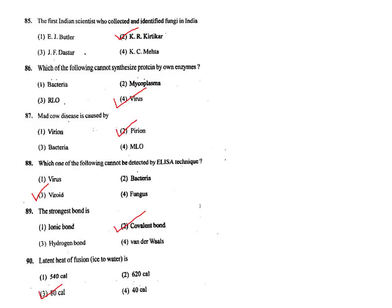Q88. Which of the following cannot be detected by ELISA? Viroids cannot be detected by ELISA. The correct answer is option 3.